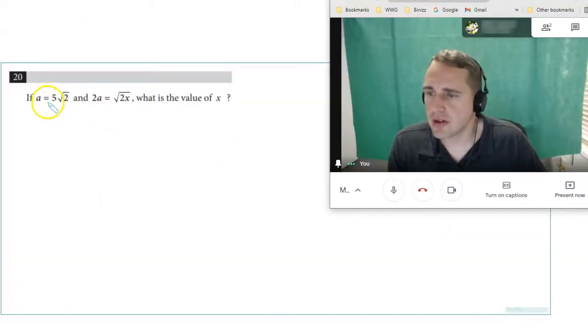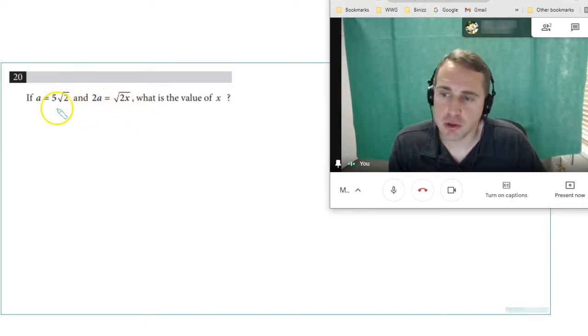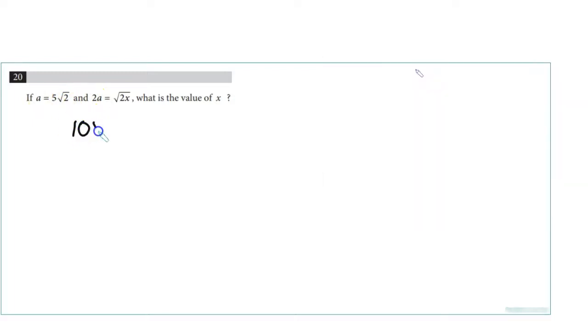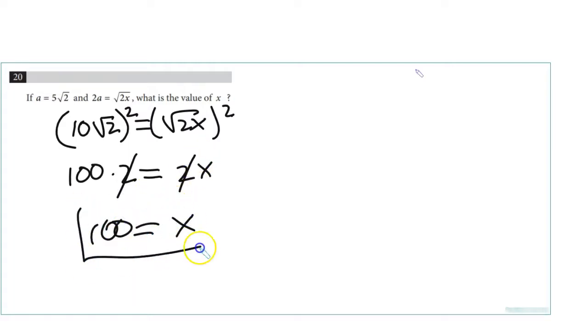Number 17: a equals 5√2 and 2a equals 2√x. What's the value of x? If I take 2 times a, I've got 10√2 equals √(2x). I can square both sides. That's 100 times 2 equals 2x. Well, the 2's cancel. x is 100. Done.